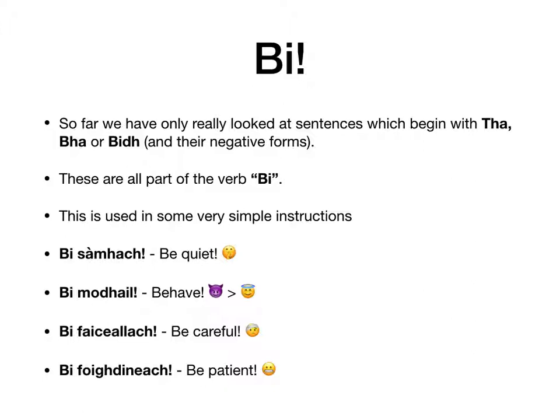The verb you've dealt with most is 'be', and our sentences begin with tha, bha, or bi. Their negative forms are chan eil, cha robh, and cha bhi. They all form part of the verb 'to be' — just 'be'. And these are used in some very simple instructions that you can use the vast majority of the time.